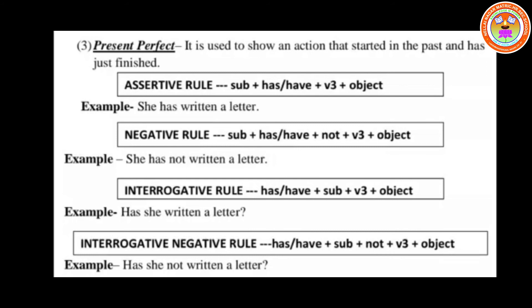V3 is the past participle of the verb — many verbs end in ED, but there are exceptions. Example: 'She has written a letter.' Since it is third person singular, we use 'has'. For first and second person — I, you, we, they — we use 'have'. Only for third person singular (he, she, it) do we use 'has'.